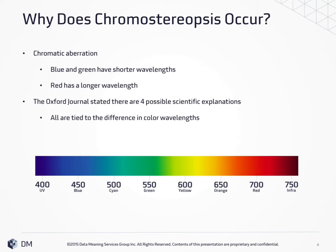If you look at the diagram across the bottom of the screen, you'll notice blue and green have shorter wavelengths. On the opposite end of the spectrum, red has a longer wavelength. The Oxford Journal published a study highlighting four possible scientific explanations for why this occurs, all tied to differences in color wavelengths.